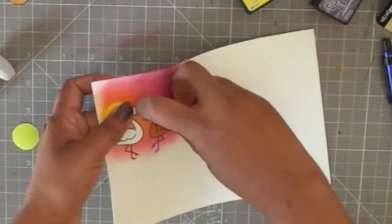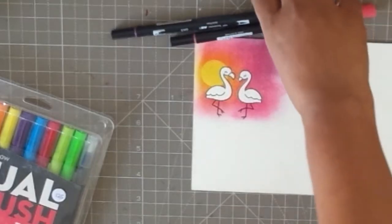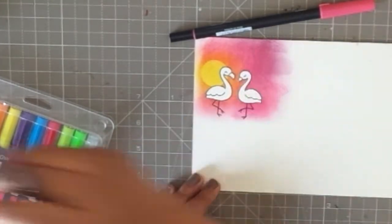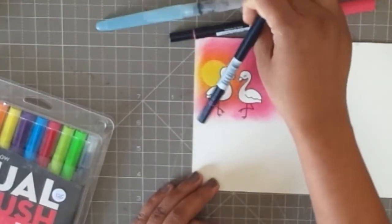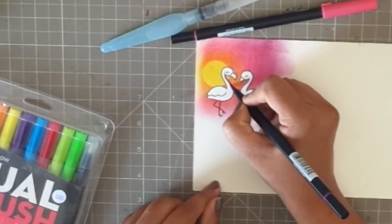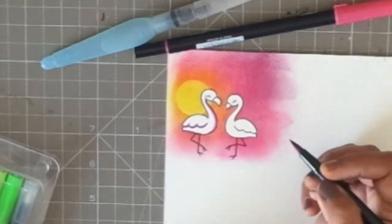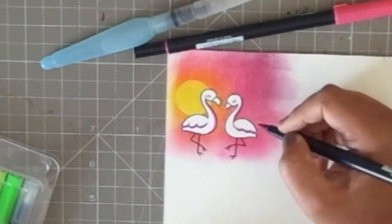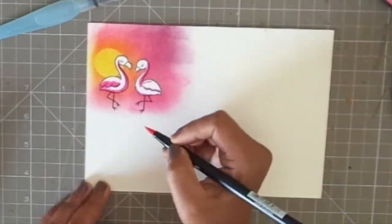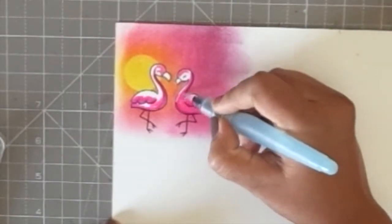Once I have the background, I'm going to remove this mask that I had on the flamingos and you can see how well that has turned out. I'm going to go back with the brush pens and start coloring in the flamingos. This color is highly pigmented so you need very little color with the pens on the paper and you can just blend it out with water later. I'm adding two shades of pink here, a more purplish and then this hot pink magenta kind of shade.